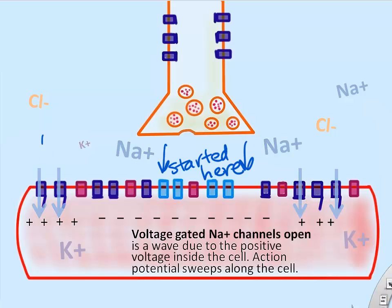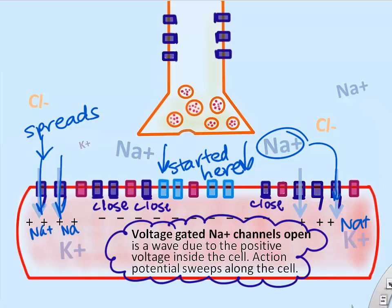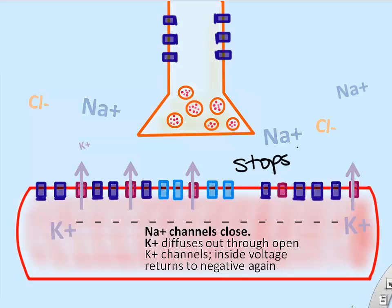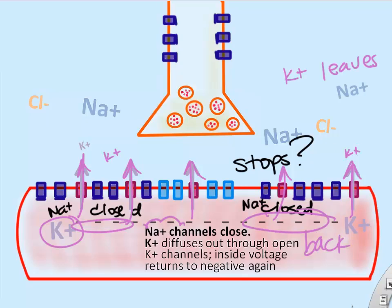The acetylcholine receptors cause sodium to rush in, which triggers more sodium to rush in, which triggers more — spreading as a wave. When we want to stop the action potential, those voltage-gated sodium channels start to close by their own structure. When they're all closed, sodium stops rushing in, and potassium then rushes out through open channels, making the inside of the muscle cell negative again and returning to rest. That's how an action potential occurs.